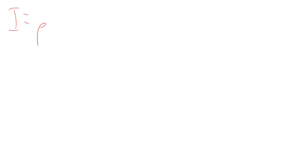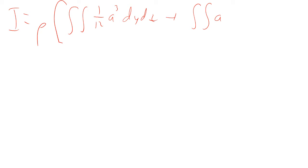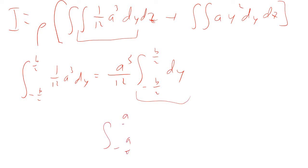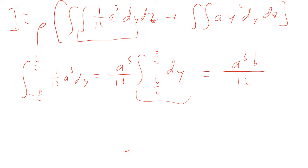So now this is rho times the integral of one twelfth a cubed dy dz plus the integral of a y squared dy dz. We have the integral from minus b over 2 to b over 2 of one twelfth a cubed dy. The a cubed over 12 comes out, and we just have the integral from minus b over 2 to b over 2 dy — just like we did the integral for x, that was just a. So this is just going to be b, giving us a cubed b over 12.